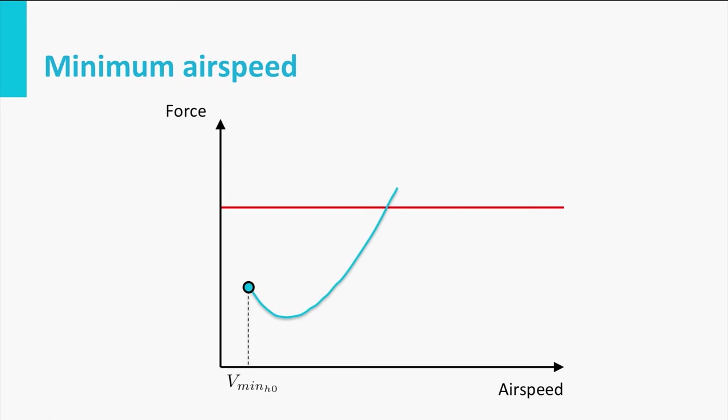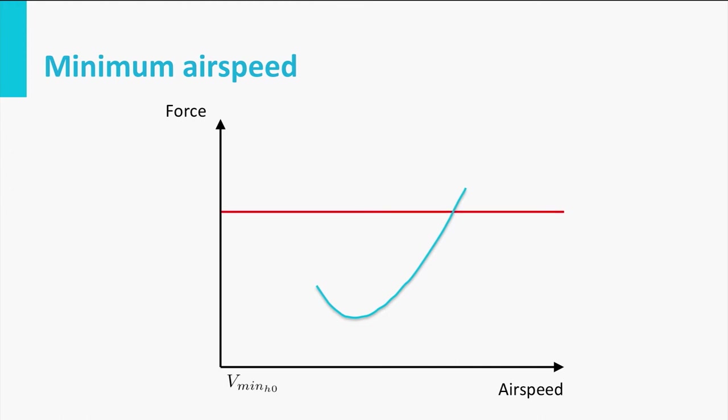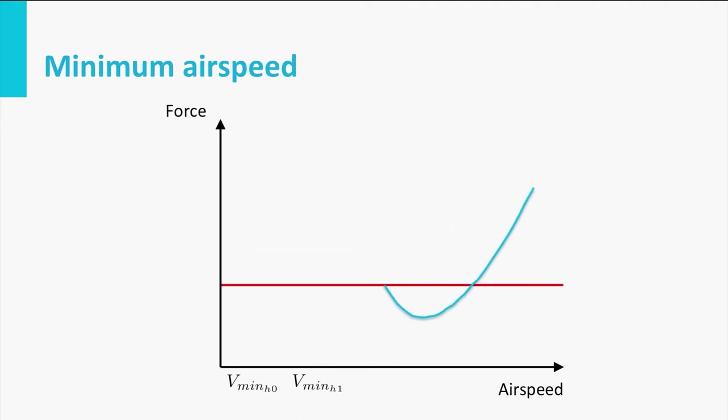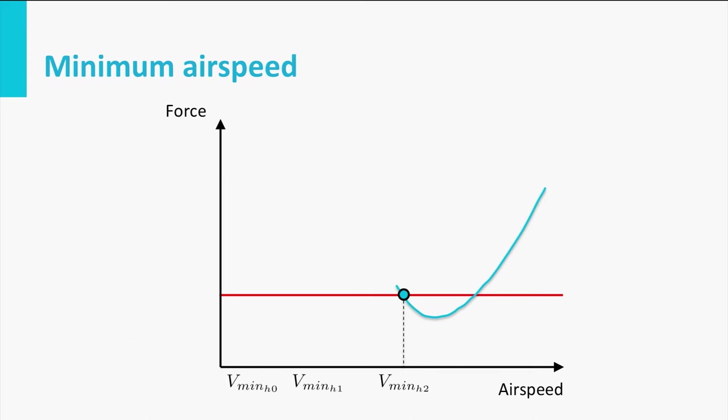However, when altitude increases this curve shifts to the right, as we determined last time, and the maximum available thrust level decreases as well. At a specific altitude these graphs will actually intersect. When this happens, the point for CL max occurs at a drag value which is larger than the maximum thrust level. In other words, there is not sufficient engine power to fly at the minimum aerodynamic airspeed.